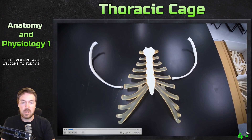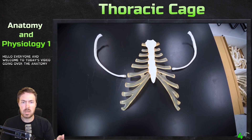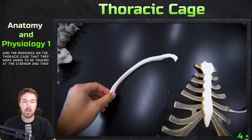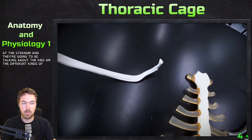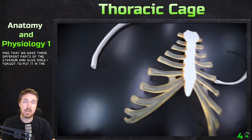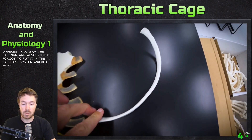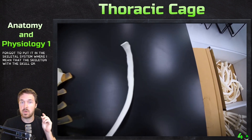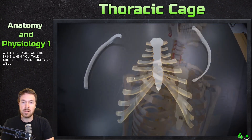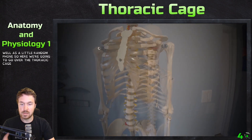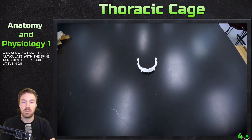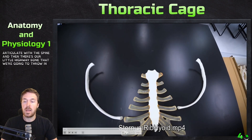Hello everyone, and welcome to today's video going over the anatomy and the markings on the thoracic cage. Today we're going to be talking about the sternum, the different kinds of ribs, the three different parts of the sternum, and also the hyoid bone — a little random bone we forgot to cover in the skull or spine videos. We'll show how the ribs articulate with the spine, and then we'll throw in the hyoid bone at the end.